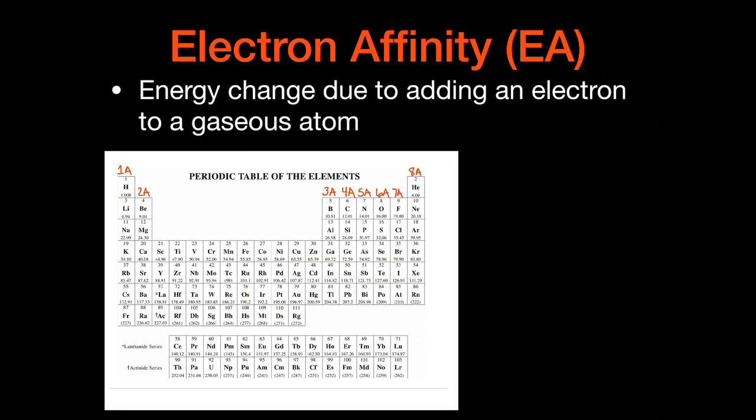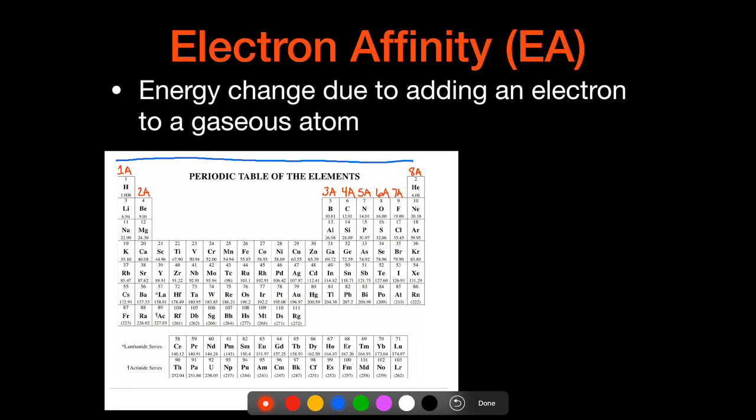Our next trend is on electron affinity, and that's the energy change due to adding an electron to a gaseous atom. So this is kind of the opposite of what we were just looking at with ionization energy. Ionization energy is the amount of energy required to remove an electron - that's a positive value. This is actually a negative value. We actually release energy if there is an electron being added. Our overall trend on this is that we're going to increase that electron affinity from left to right across the period. I always point my arrows in increasing order. Now we have our exceptions here as well.